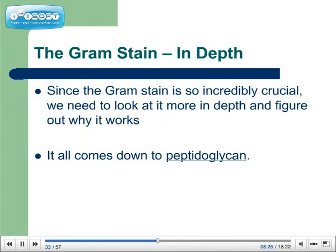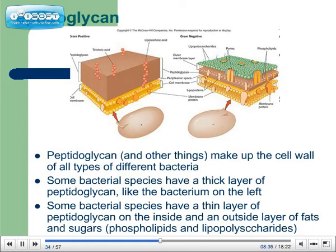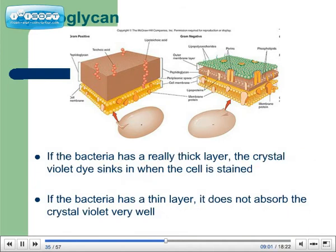It took quite some time before scientists were able to study bacteria enough to figure out how and why it worked. Since the Gram stain is so incredibly crucial, we need to look at it more in depth and figure out why it works. It all comes down to peptidoglycan. Peptidoglycan is one of the components of the cell wall of all types of different bacteria. Some bacterial species have a thick layer of peptidoglycan, and some bacterial species have a thin layer of peptidoglycan on the inside and an outside layer of fats and sugars — or if you want to get technical, phospholipids and lipopolysaccharides.